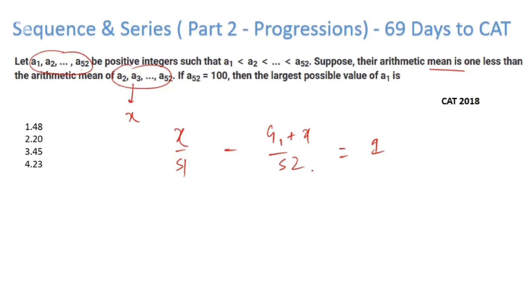So x/51 minus (a₁ + x)/52, that is you can write it as x/51 - x/52 and finally - a₁/52, that is equal to 1. So this becomes -1, this becomes a₁/52. If I multiply this, a₁ becomes x/51 - 52.